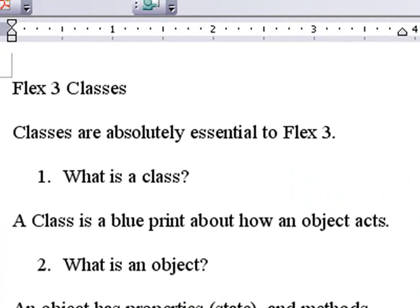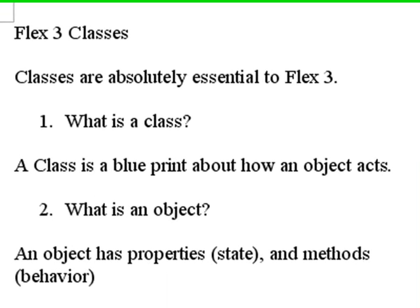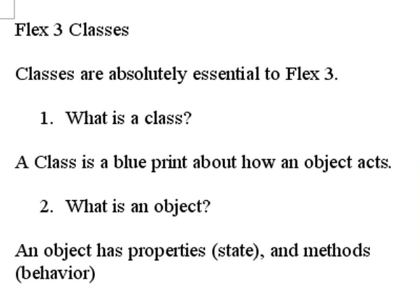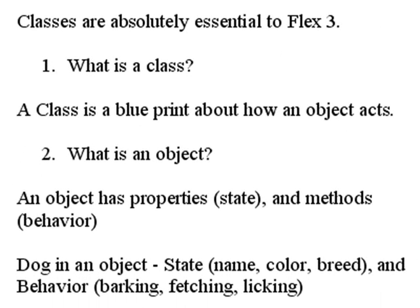So what is a class? A class is a blueprint about how an object acts. What is an object? An object has properties like a state and methods like a behavior. For example, my dog is an object — it has a state: a name, a color, a breed, and behavior like barking, fetching, licking.